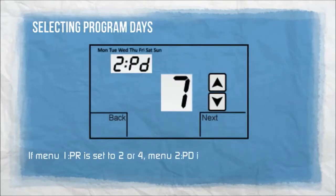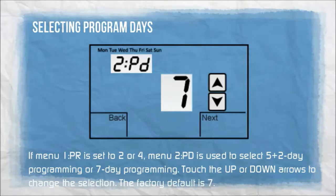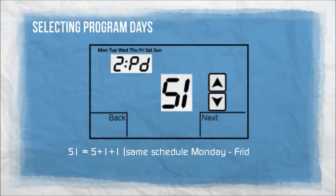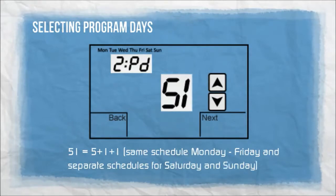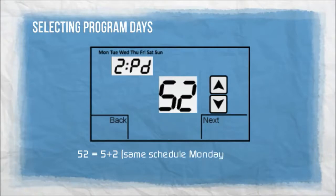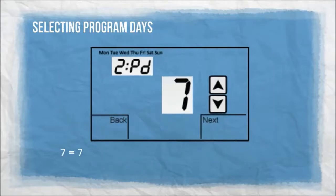If menu 1PR is set to 2 or 4, menu 2PD is used to select 5-plus-2 day programming or 7-day programming. Touch the up or down arrows to change the selection. The factory default is 7. 5-1 is for 5 plus 1 plus 1: same schedule Monday through Friday and separate schedules for Saturday and Sunday. 5-2 is for 5 plus 2: same schedule Monday through Friday and Saturday through Sunday. 7 equals 7-day programming, individual programming for each day of the week.